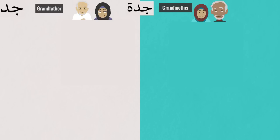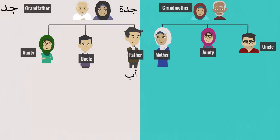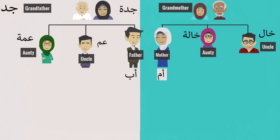Now let's have a little recap. Jad — Grandfather. Jadda — Grandmother. Ab — Father. Um — Mother. Am — Uncle from the father's side. Amma — Aunt from the father's side. Khal — Uncle from the mother's side. Khala — Aunt from the mother's side.